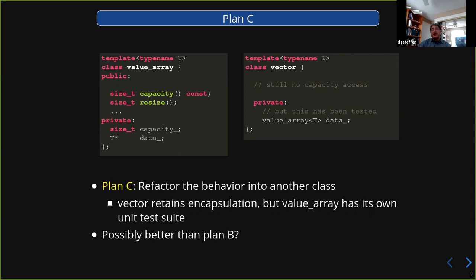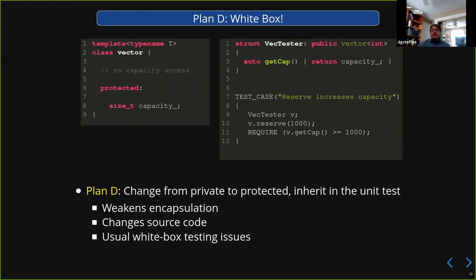But maybe you can't do that either. Maybe refactoring is just too hard. We'll get to a more concrete example later of when you might really honestly not be able to do this. So if you're up against it and can't refactor, plan D is we have to do something even more ugly: we go to a white box testing approach and abandon trying to test using only the public interface. We reach into the guts and look to see that the capacity thing is doing what it should.